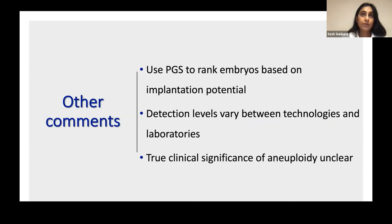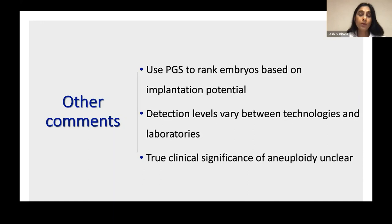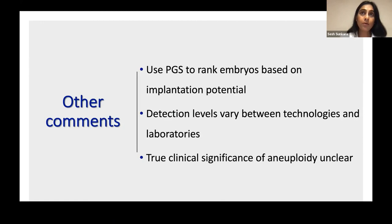Rather than simply replacing embryos based on euploid or aneuploid status, we should rank embryos based on the level of euploidy and mosaicism. If there is a completely euploid embryo, transfer it first — but do not discard the mosaic embryos. They remain available for subsequent transfers if the first attempt fails or if the patient wants another child. Detection levels also vary by technology and laboratory; different laboratories have different cutoffs for calling an embryo euploid or aneuploid, even using the same technique.